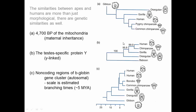When we use mitochondrial DNA, which is maternally inherited, we get a tree where chimps are our closest relatives, then gorilla, then orangutan, with an outgroup primate that is not a great ape. When we use protein on the Y chromosome, we get human and chimp as closest relatives, then gorilla, then orangutan, with baboon as the outgroup.